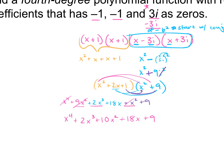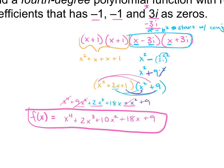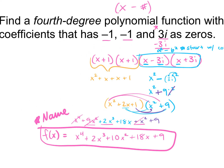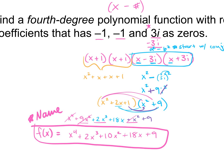The very last step is we want to make sure we name it as a polynomial function. So f of x equals the function that we just found — you can call it f of x, g of x, h of x, whatever you want; just don't forget to name it. How many zeros did we start with? 4. And what was our highest degree? x to the 4th power. It will always match up. If you start with 4 zeros you're going to end up with x to the 4th power, just like before when we had x to the 4th power and we found 4 zeros.